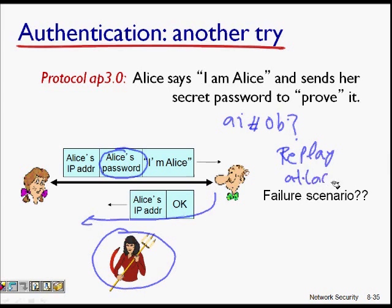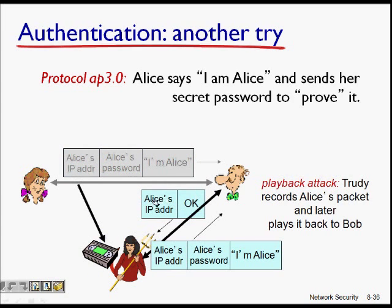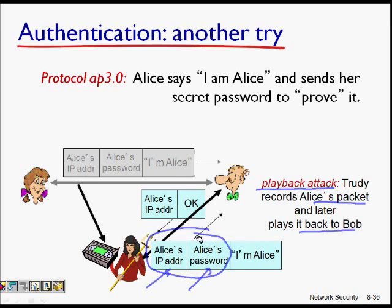In the replay attack, Trudy records Alice's packet — she knows the first part is the IP address and the next part is the secret password — and later plays it back to Bob. Trudy records Alice's packet and replays it to Bob. Bob is then sure that it is Alice and starts revealing all the secrets, so this authentication method is also not secure.